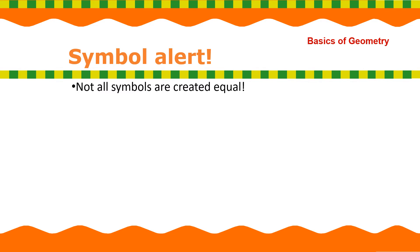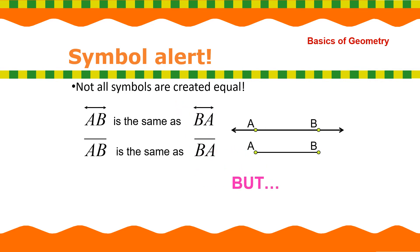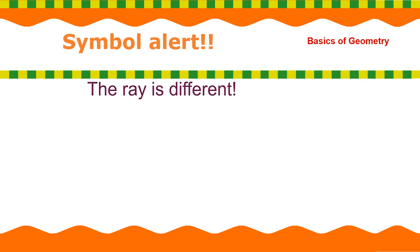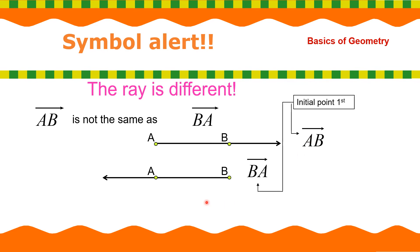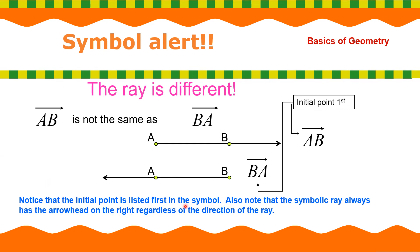Now, symbol alert. Not all symbols are created equal. Look at this. So, we have line AB is the same as line BA. Okay. The same. Segment AB is the same as segment BA. Correct? But the ray is different. Ray AB is not the same as ray BA. Look. So, this is ray AB. And this is ray BA. The initial point of the first. Notice that the initial point is listed first in the symbol. Also note that the symbolic ray always has the arrowhead on the right regardless of the direction of the ray.